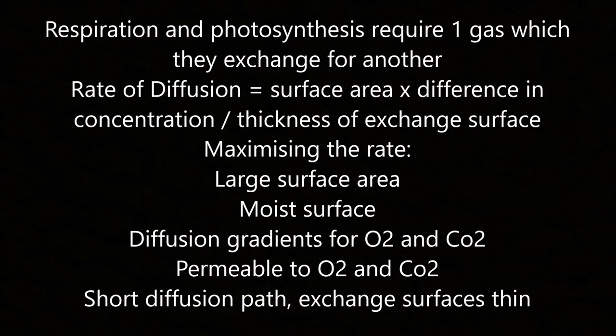The next topic is gas exchange. Respiration and photosynthesis require one gas which they exchange for another. The rate of diffusion equals surface area multiplied by the difference in concentration, divided by the thickness of the exchange surface. To maximise the rate you need a large surface area, a moist surface, diffusion gradients for O2 and CO2, permeability to O2 and CO2, a short diffusion path, and exchange surfaces to be thin.